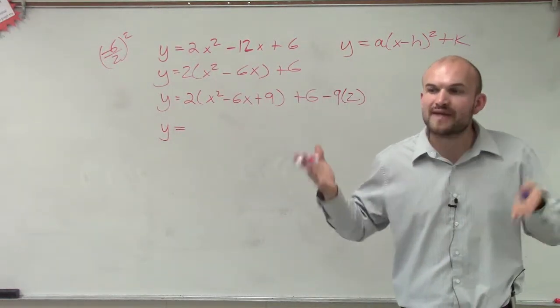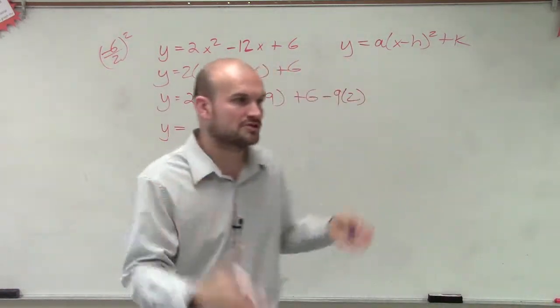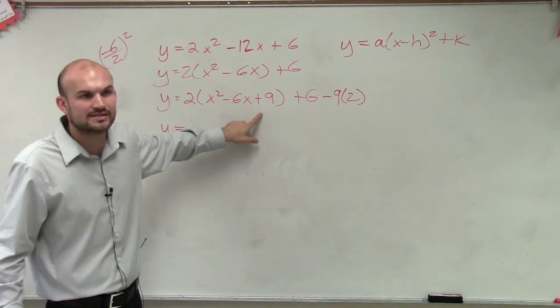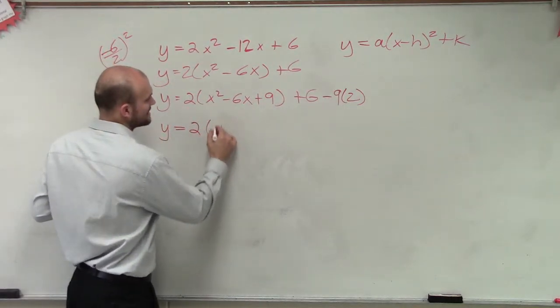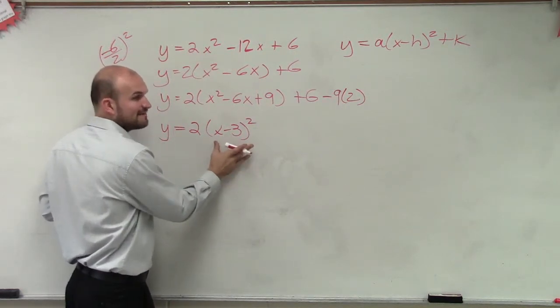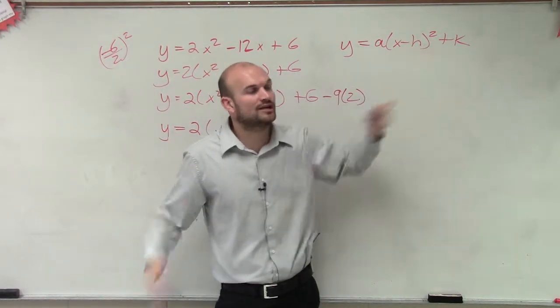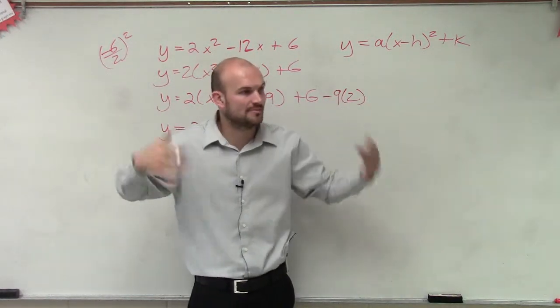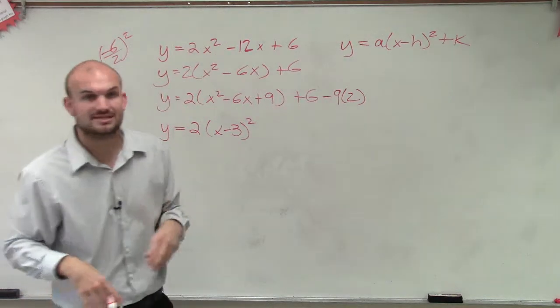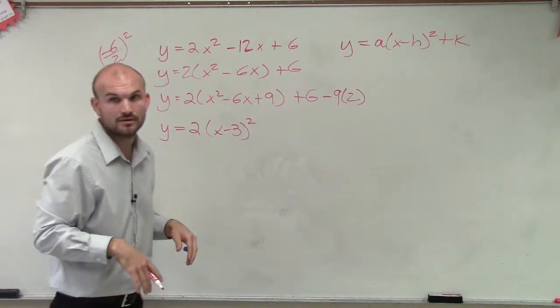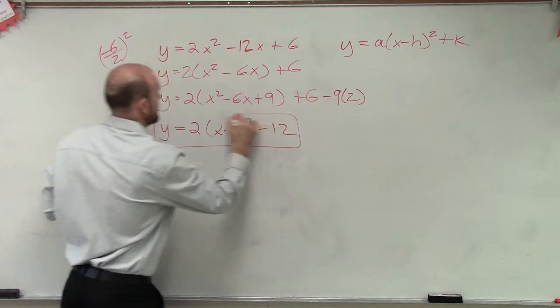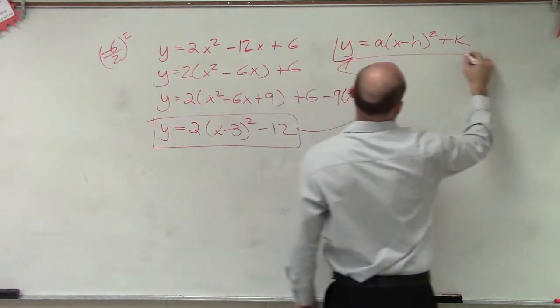So the whole purpose of this, why do we want a perfect square trinomial? The reason being is because we can factor a perfect square trinomial into a binomial squared. If I said factor this, x squared minus 6x plus 9, you guys should know the factored form of this is x minus 3 times x minus 3, which we rewrite as x minus 3 squared. Do you see why it's important to have a binomial squared? Because now when you have a binomial squared, it's in this format. So that's why we want to create something that we can factor to a binomial squared. Now, we do 6, and we do negative 9 times 2 is negative 18, plus 6 is going to be negative 12. Now, ladies and gentlemen, we have an equation in this format.